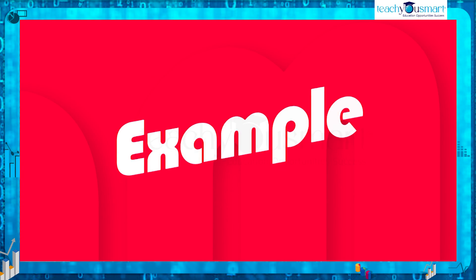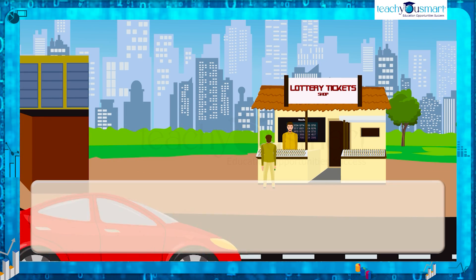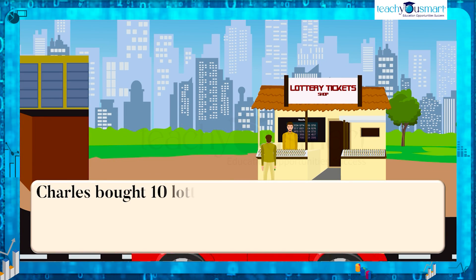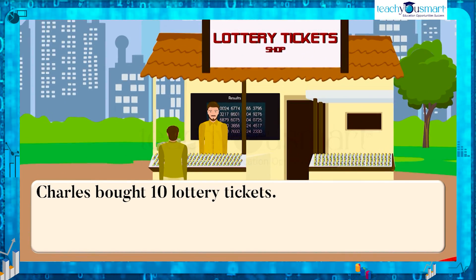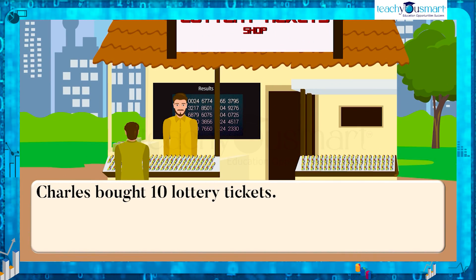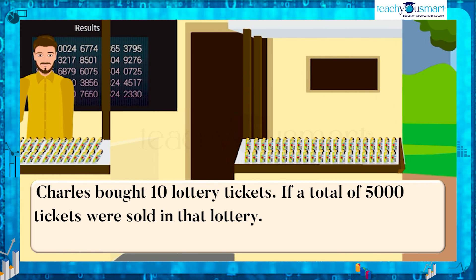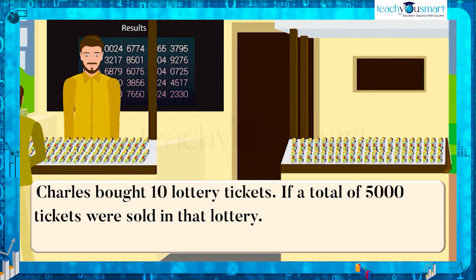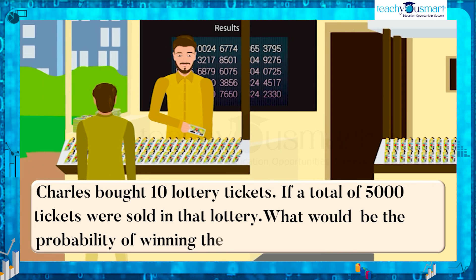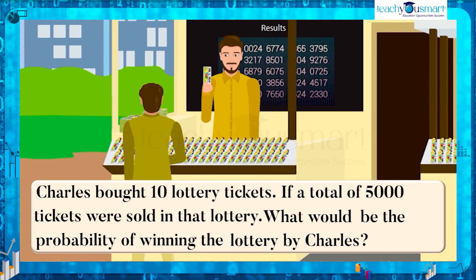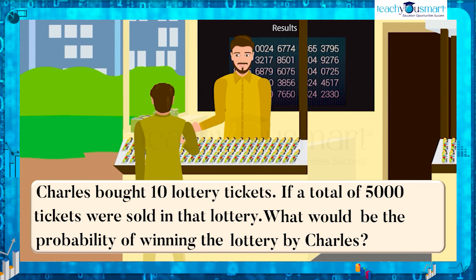Now let us move to another example. Charles bought 10 lottery tickets. If a total of 5,000 tickets were sold in that lottery, what would be the probability of winning the lottery by Charles?